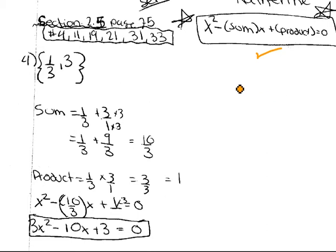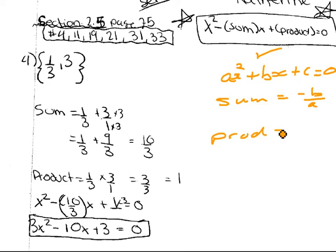The other thing that you could have used is, of course, we know that ax squared plus bx plus c equals 0, and the sum, another way of writing it, is saying that the sum equals minus b over a, and the product of the roots is c divided by a. So you can always find it by using this as well.